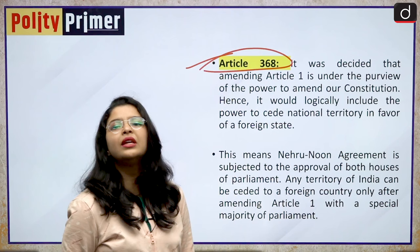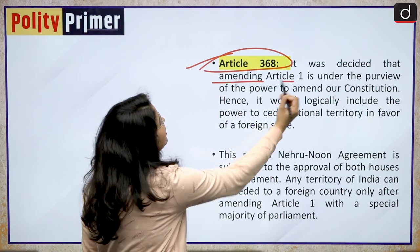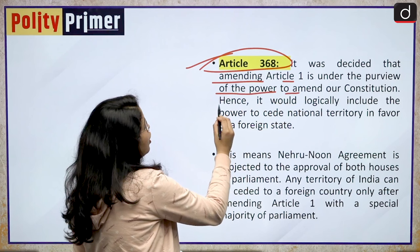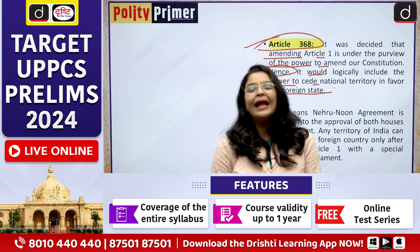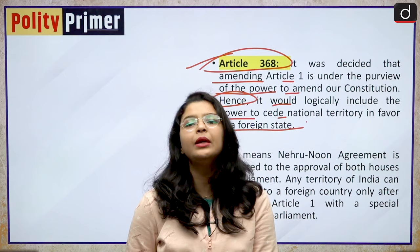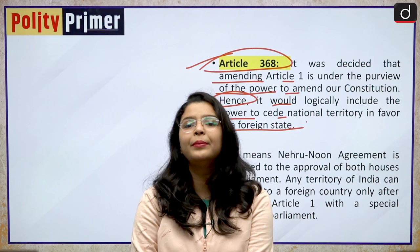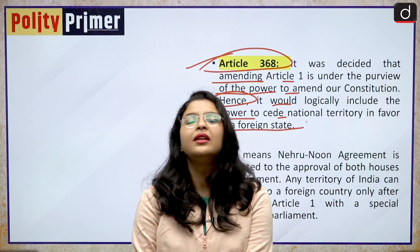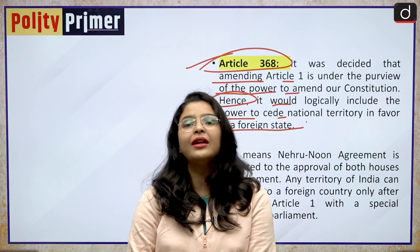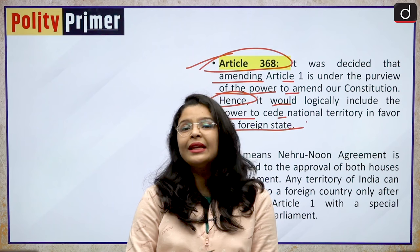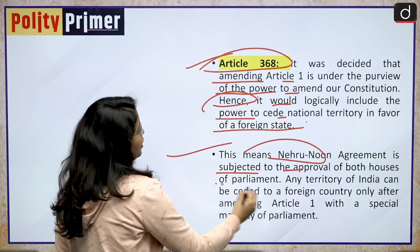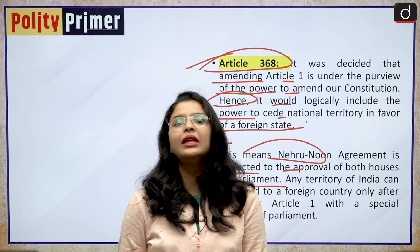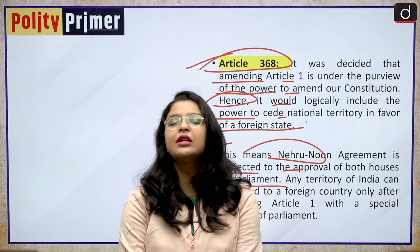In relation to Article 368, which deals with the amendment of the Indian Constitution, it was decided that amending Article 1 is under the purview of the power to amend our Constitution. Hence, it would logically include the power to cede national territory in favour of a foreign state. The Indian government is allowed to cede its own territory to a foreign state, but it can only be done by bringing a constitutional amendment under Article 368. That is why the 9th Constitutional Amendment was enacted by our Indian Parliament — so that the border dispute between India and Pakistan could be resolved and the enclave-to-enclave transfer could take effect. The Nehru-Noon Agreement is thus subject to the approval of both houses of Parliament, and a territory transfer can only be done by bringing a constitutional amendment.